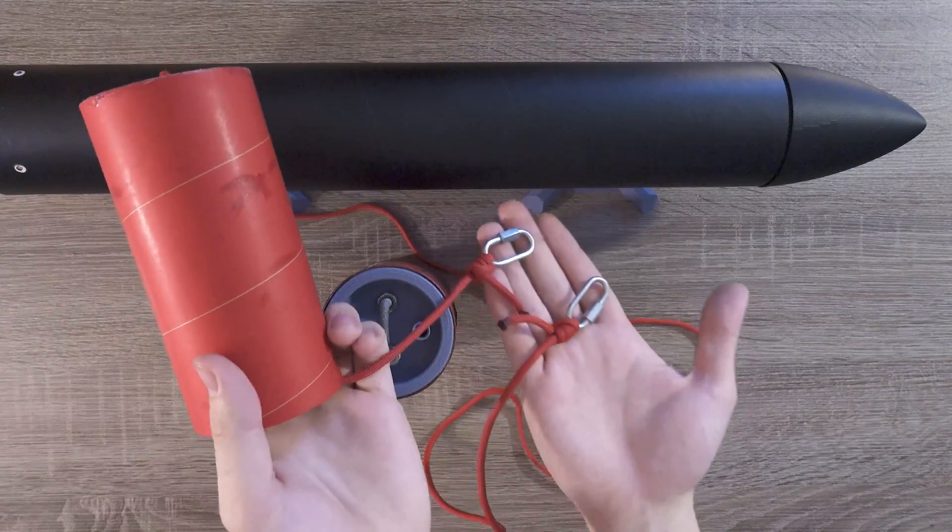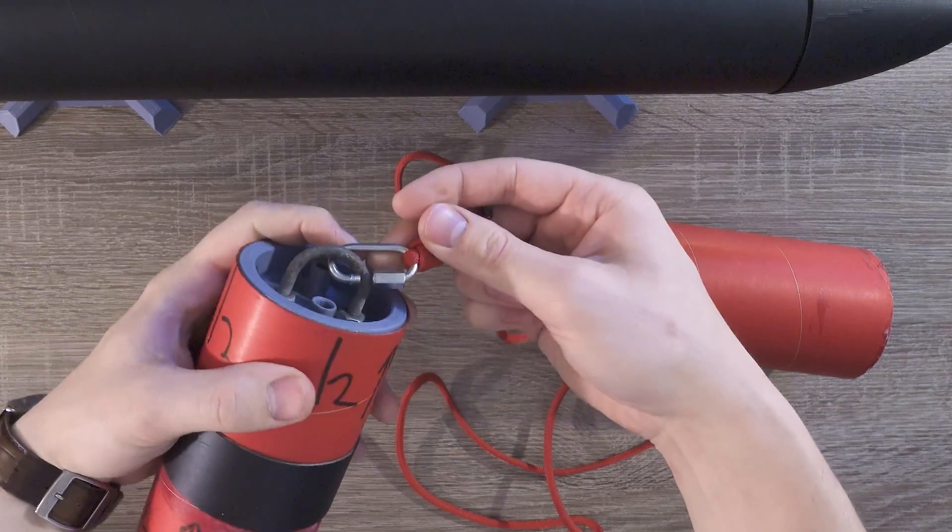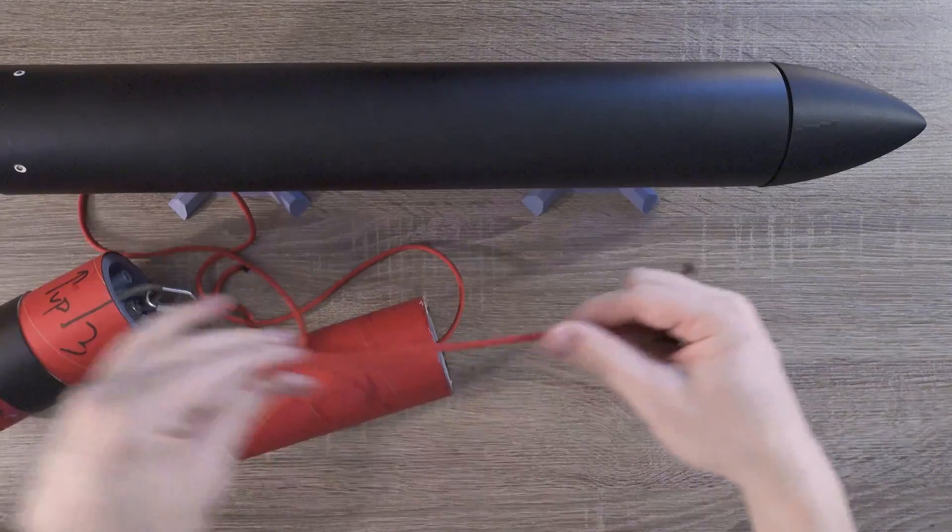We'll start by attaching the shock cord to the body coupler. This is pretty simple. Unscrew the quicklink, snap it to the U-bolt, and then screw it back down. Make sure the connection is secure, and then let's move on to the nose cone.